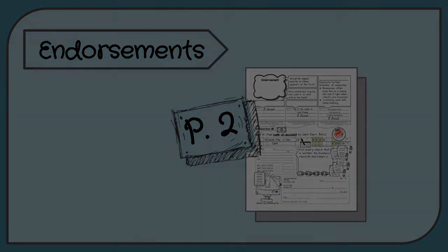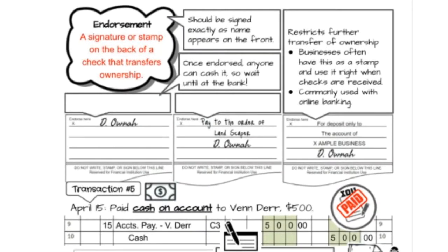An endorsement is defined as a signature or stamp on the back of a check that transfers ownership. If somebody writes a check to you, you need to sign the back of it before you take it to the bank to deposit or cash it. It should be signed exactly as the name appears on the front. Once it's endorsed, anyone can take it to the bank and cash it, so you don't want to sign the back of a check until you're at the bank.